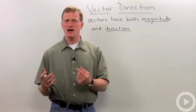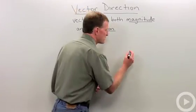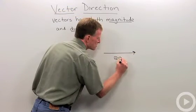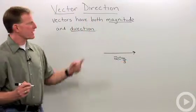Both acceleration and velocity are often used as vectors. So here's a vector. Let's say this vector is 20 meters per second. Well, that's the magnitude,